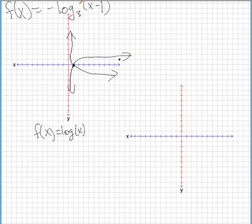It's going to be translated to the right by 1. So our asymptote here was 0, right? Because you can't take a log of 0. So that's 0, and our asymptote is going to be at positive 1, because that's when the inside equals 0. And we can't have anything negative there.